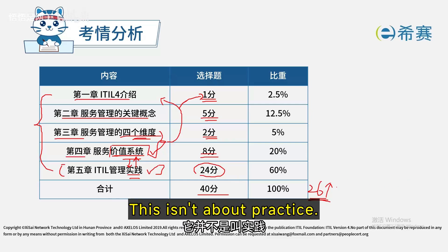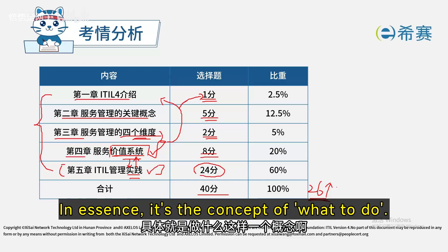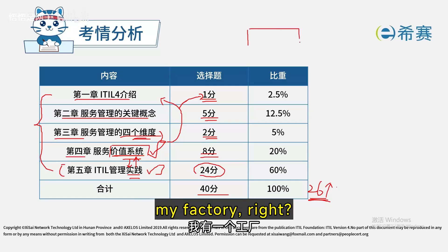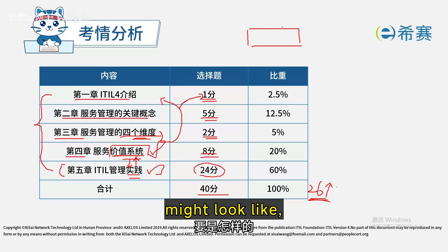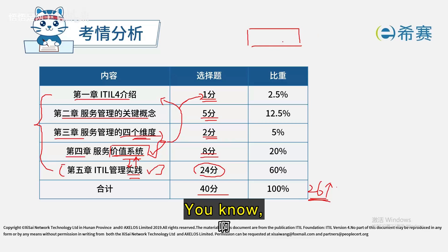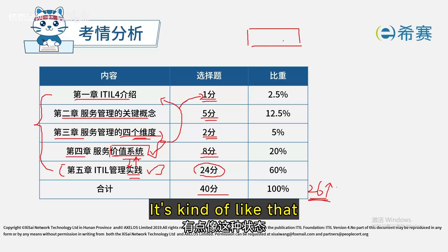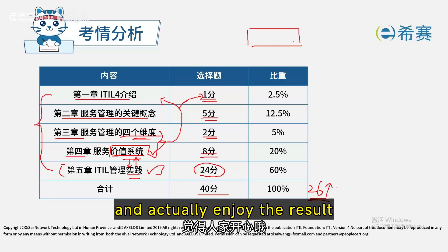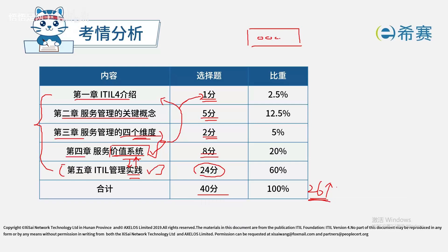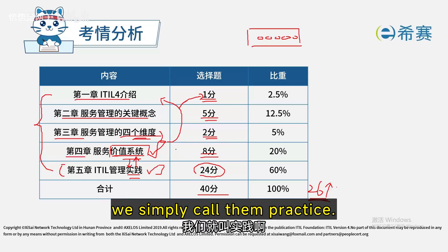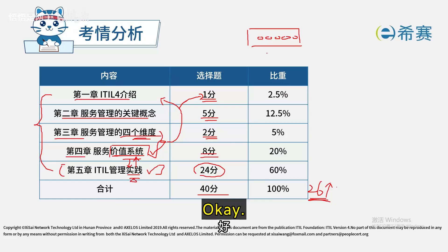In earlier versions like v2 or v3, this wasn't labeled 'practice' but rather 'processes and functions.' The idea is: we've outlined a broad framework — like owning a factory that should produce something and reach a certain goal — but all of that is vague. To turn this idea into reality, you need people to accept it and be satisfied with it. This involves specific processes, steps, working methods, skills, and various procedures.